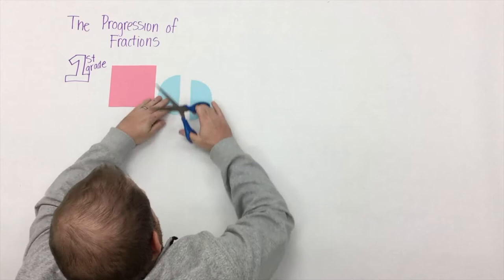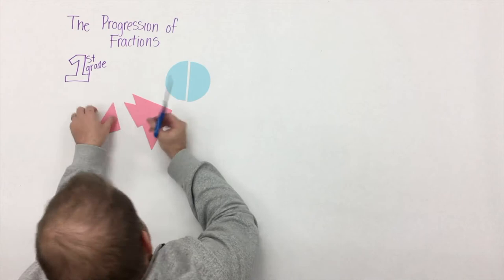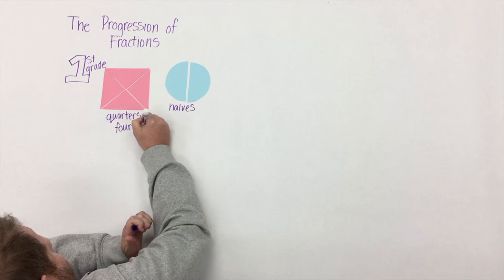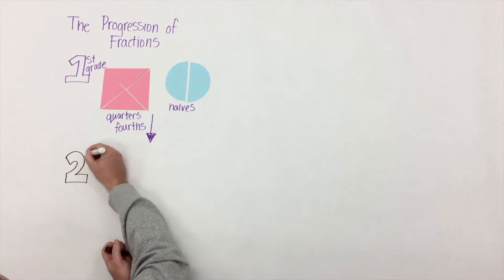I think students should be able to use that word as well. In first grade, students should be able to partition squares and rectangles into halves and quarters, which can also be represented or called fourths. The vocabulary development here is the biggest piece in first grade.